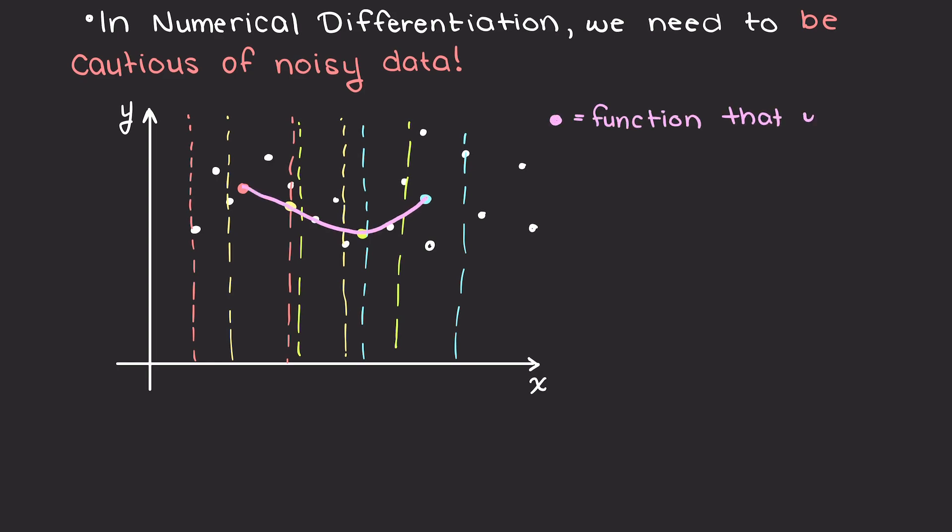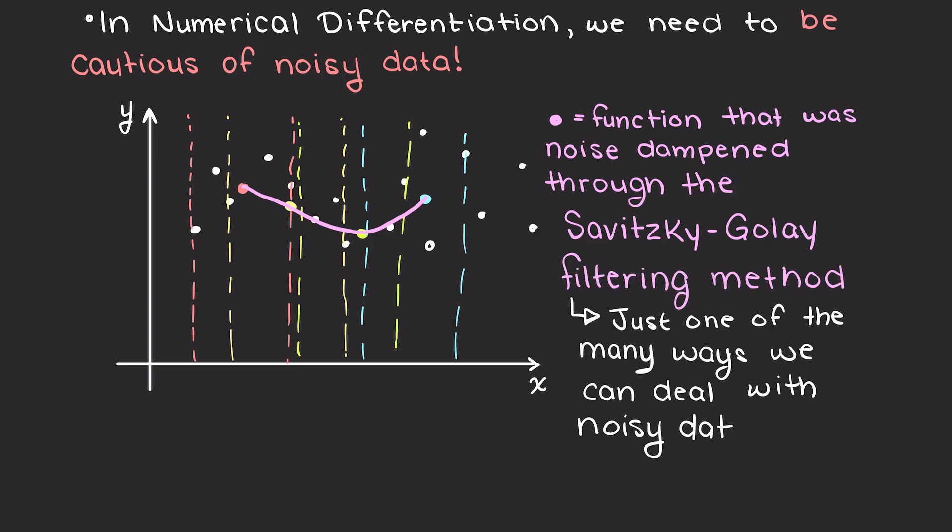An example of this is the Savitsky-Golay filtering function, which is a method that involves fitting a polynomial function to a small window of neighboring data points, and then we'll use this developed polynomial to estimate the smoothed differentiated values.